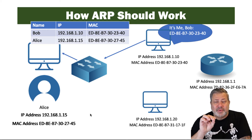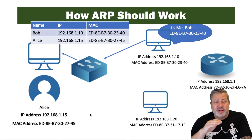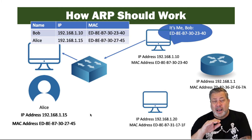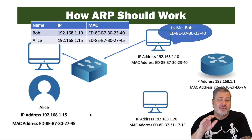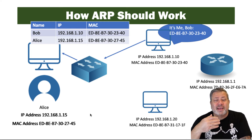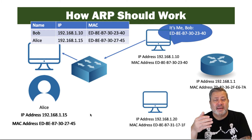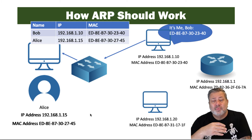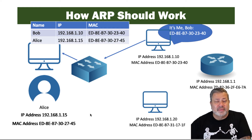When that MAC address is received by both the switch and the computer, the ARP table will be updated to include that new information. So now, in addition to Alice's computer being logged in that ARP table, Bob's computer is also logged. The ARP table now knows that address 192.168.1.10 is associated with the MAC address ending in 23:40 in hexadecimal. Next time Alice sends information to Bob on that .10 computer, it will not need to be resolved — it'll go there automatically.